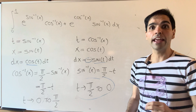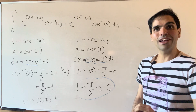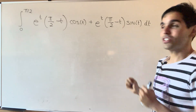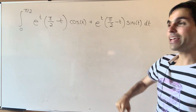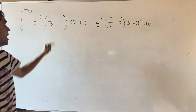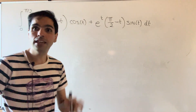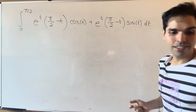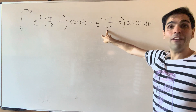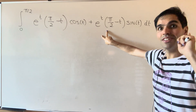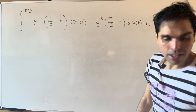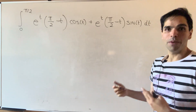So after all those u-substitutions, what you end up getting is the following. After some substitutions, you end up getting the integral from 0 to π/2 of e^t times (π/2 − t) times cos(t), plus the same thing but with sin(t). And you will see we will now evaluate both integrals using the same technique.